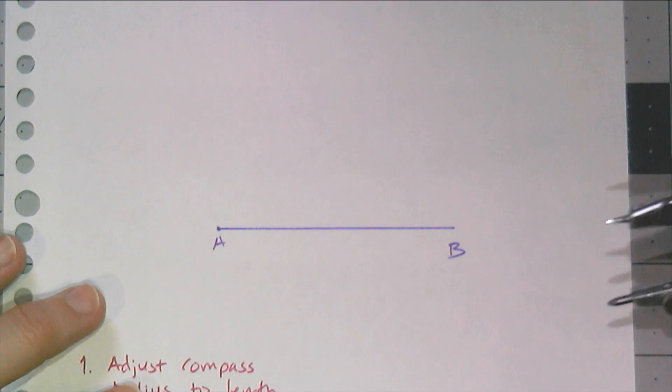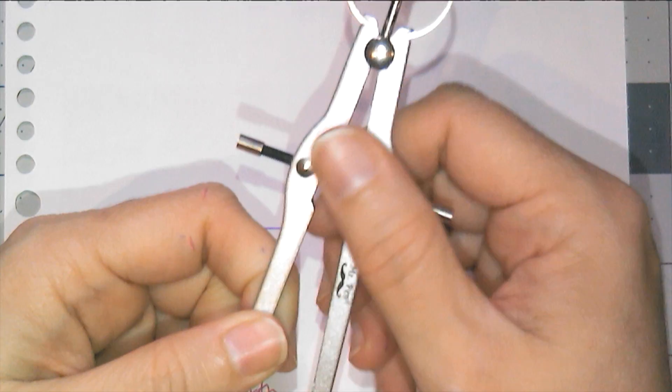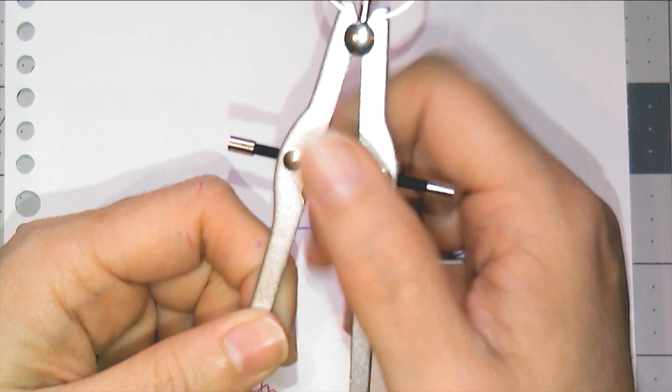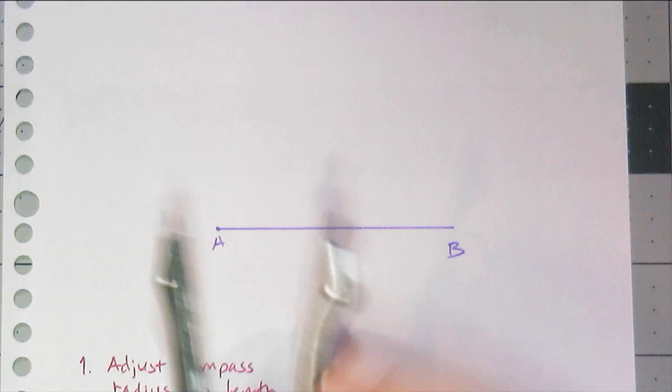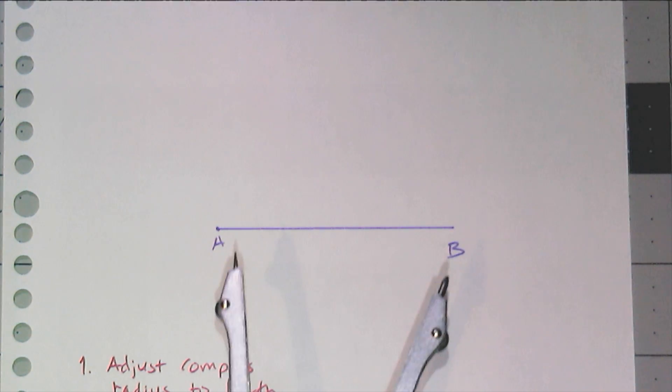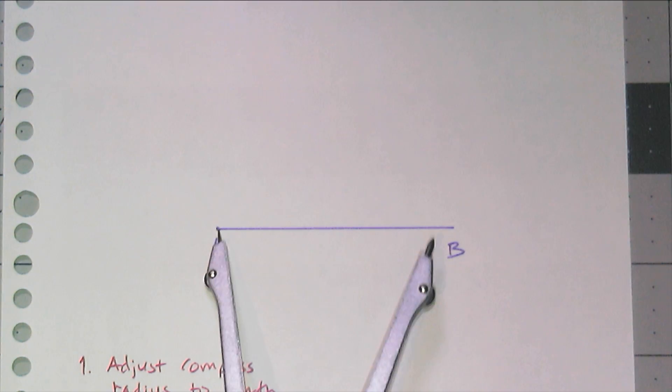So hopefully I didn't pick a line segment that was too long. The first thing you have to do is adjust your compass, and you'll notice every time I use the compass I adjust the wrong direction, very annoying. I'm going to adjust my radius so that it's this length here. So we gotta keep adjusting, and it looks about right.